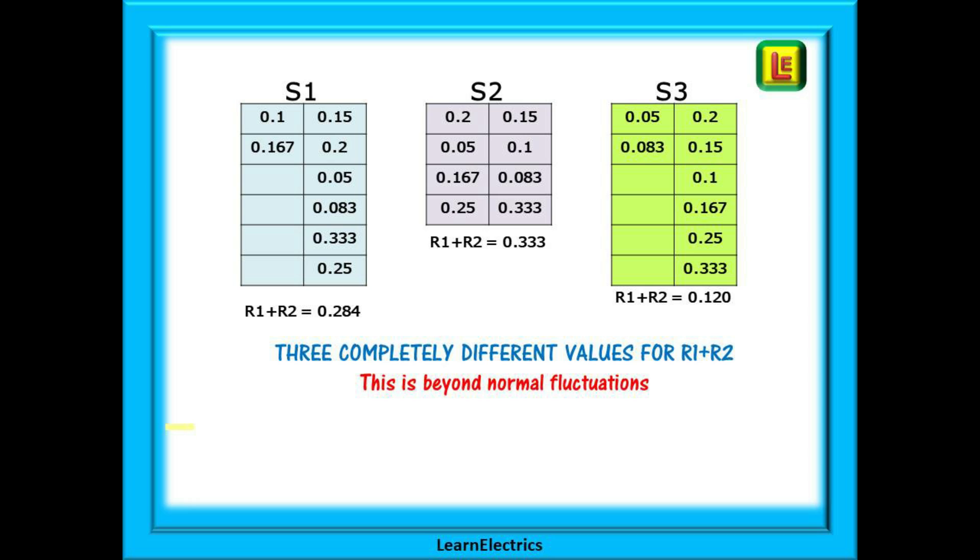If we test at socket number one, there are two routes of the test current around the circuit. One route involves just a short trip through the two lengths of conductor and the number one link. On the other, a longer route through the number two link, which includes six lengths of copper conductor. When we do our multiply, add and divide calculation, we have a value of 0.284 ohms returned for S1. S2 is different, giving a value of 0.333 ohms. And then S3 returns a reading of 0.120 ohms. Three completely different readings for R1 plus R2, well beyond normal fluctuations. And this should be a big indicator to you that perhaps you have not set up your cross connections correctly.